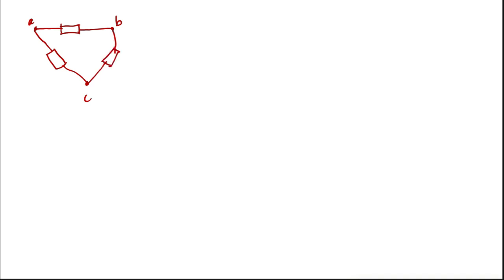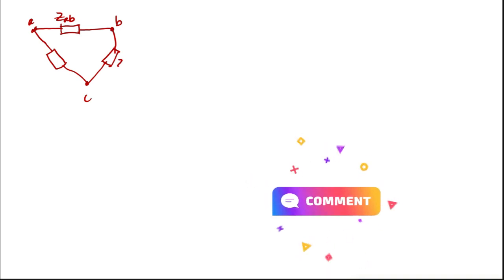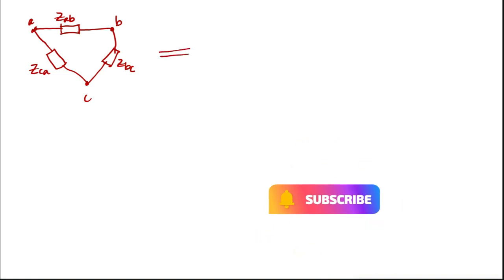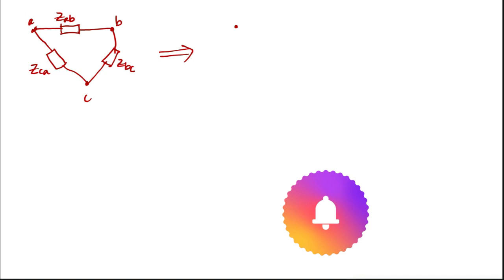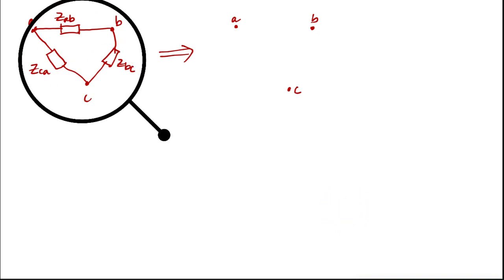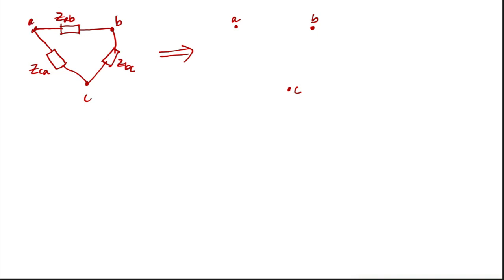Let's name this as Zab, since we consider the points in which this branch is connected — that is points A and B. Also for this one, Zbc, and for this one, Zca. We can actually connect this to a Y connection. So for instance, this is point A, B, and C, given Zab, Zbc, and Zca connected to a Y connection.